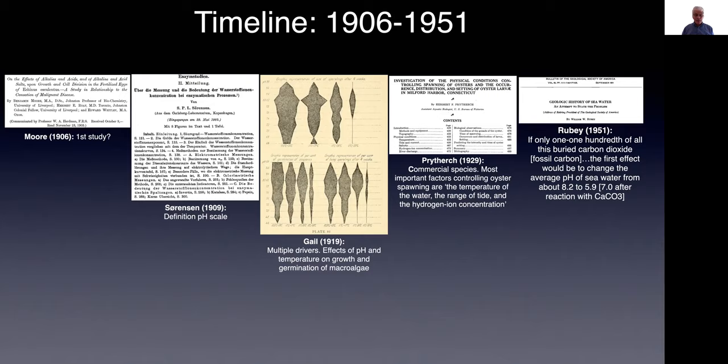There were really outstanding studies published very early on. For example, this one by Gale in 1919, which looked at multiple drivers — the effects of pH and temperature on growth and germination of a macroalgae. Another important paper from 1929 looked at the impacts of lower pH on commercial species, specifically an oyster.